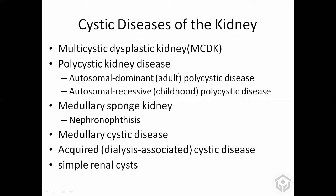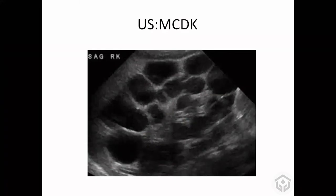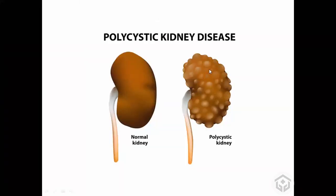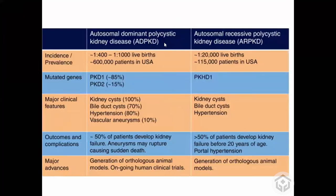The second condition is polycystic kidney disease, which has two types. The autosomal dominant type occurs in adults, and the autosomal recessive type occurs in pediatric patients. The incidence of transmitting autosomal dominant disease to the next generation is 50%, whereas for autosomal recessive it is 25%. So autosomal dominant polycystic kidney disease is more common and patients will have a family history.